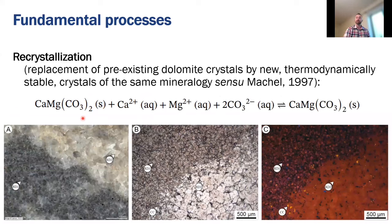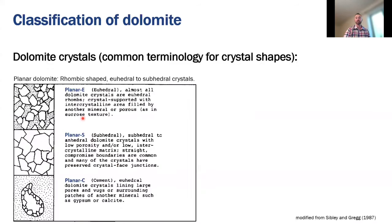The last mechanism isn't really a way to form dolomite on its own, but pre-existing crystals can undergo mineralogical stabilization, also often referred to as recrystallization. Now, recrystallization is really the bad guy of this Hollywood blockbuster movie on dolomite, because it can largely or entirely overprint the petrographical and geochemical signature of these types of rocks.